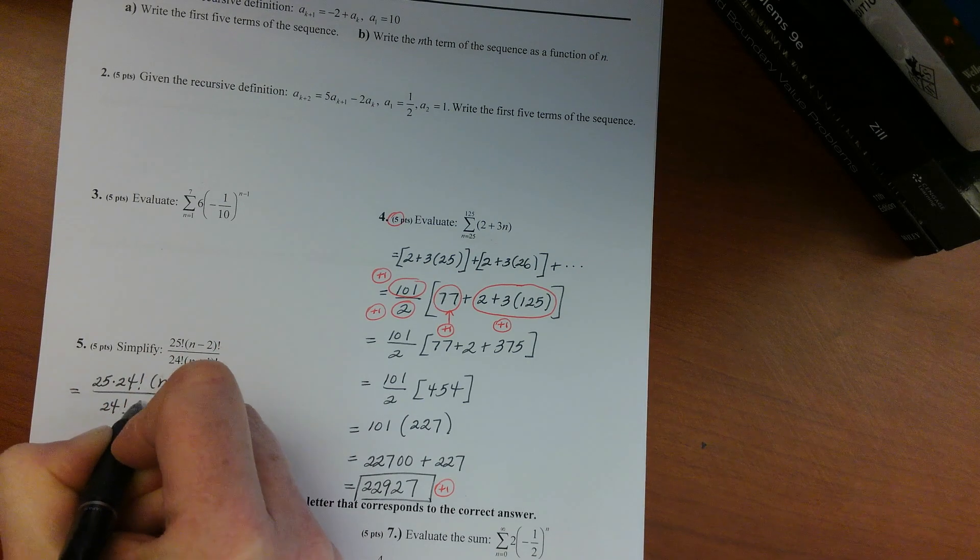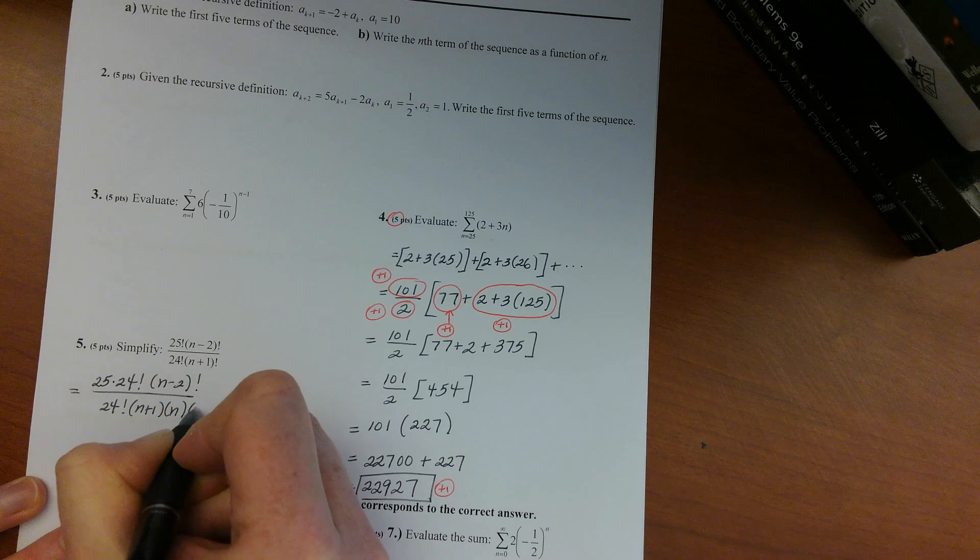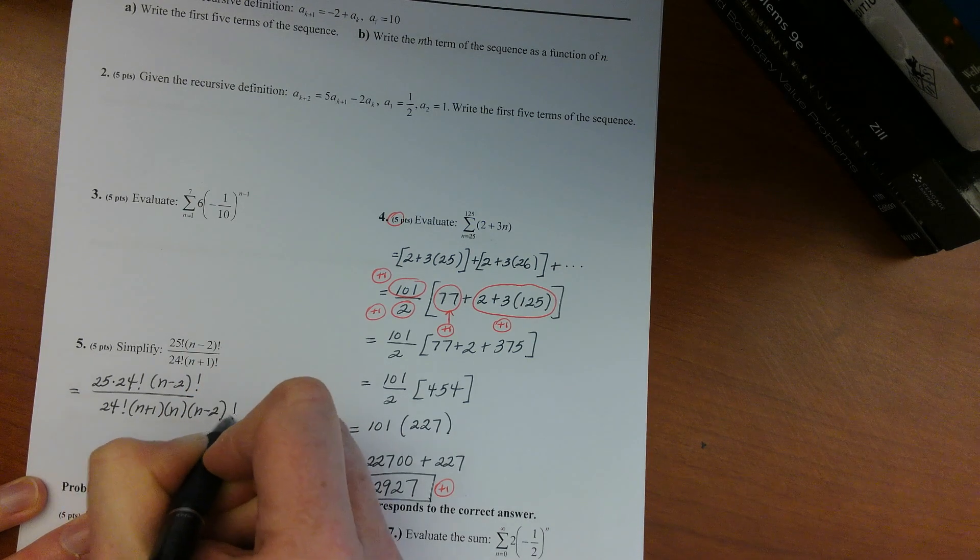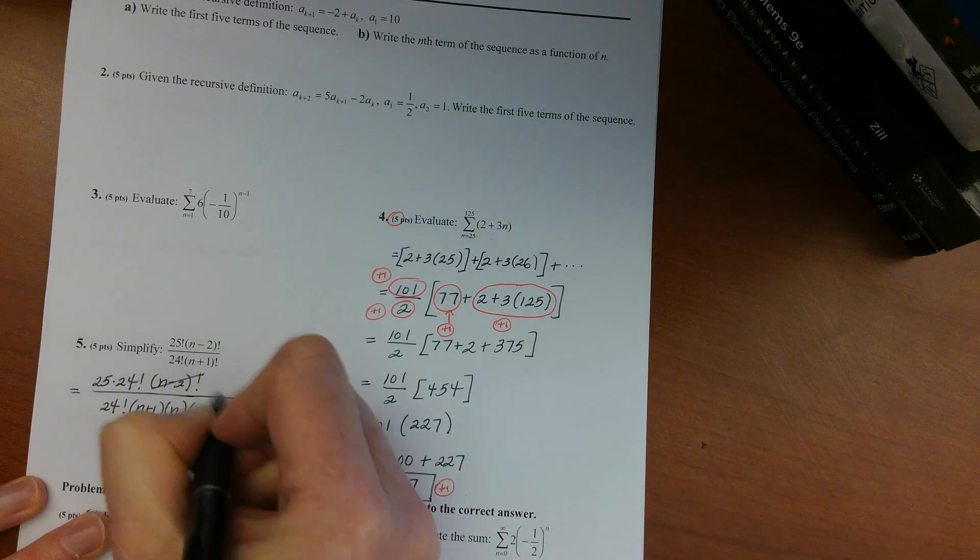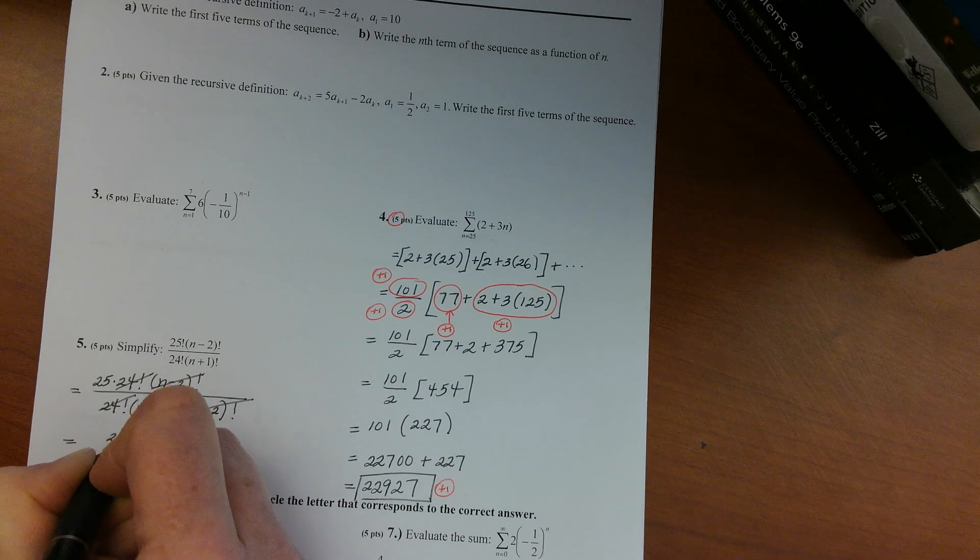You have 24 factorial, and then you have n plus 1 times n, and then the rest would be n minus 2 factorial. Okay, the n minus 2 factorials cancel.